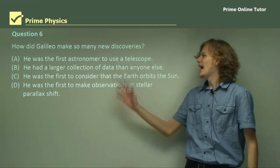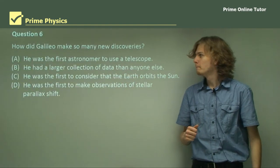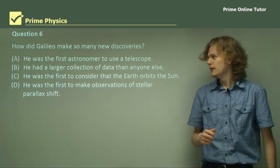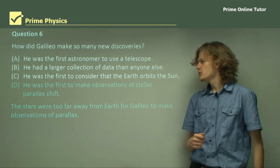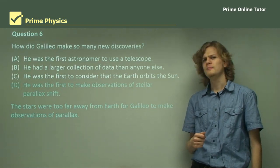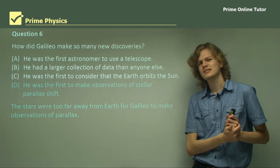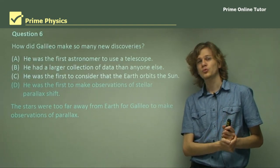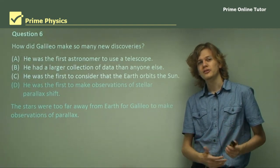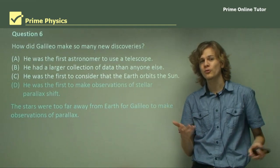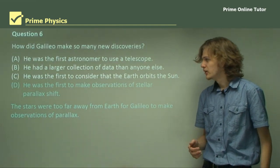Question 6: How did Galileo make so many new discoveries that hadn't already been made before? We have a few options. Starting with option D: he was the first to make observations of stellar parallax. That's not really the case — the first observation of stellar parallax wasn't made until 1838, with a telescope far bigger and more powerful than any Galileo could have built. So it's not D.